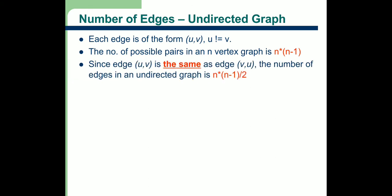But here we are discussing about the undirected graph. In an undirected graph, the edge (u, v) is the same as edge (v, u). That means if there is an edge (a, b) and edge (b, a), both are counted as the same.